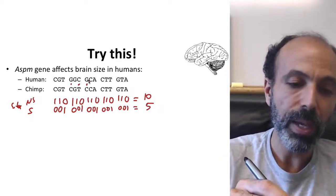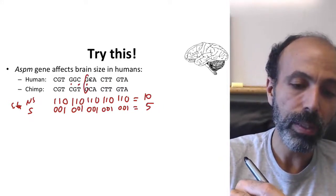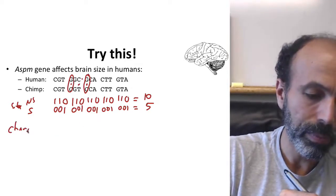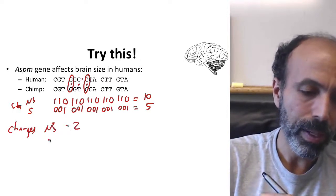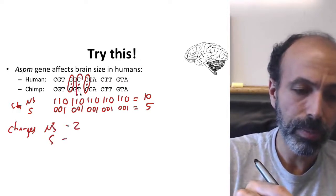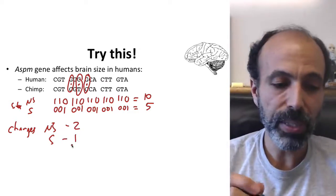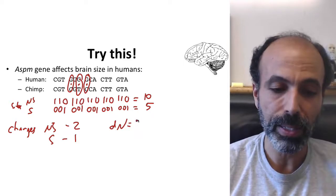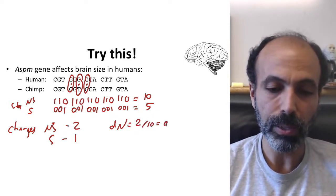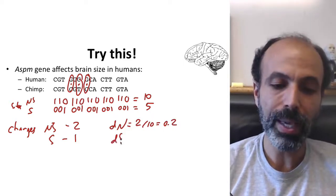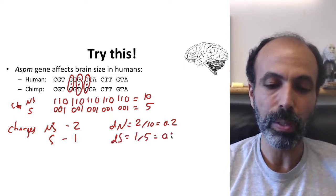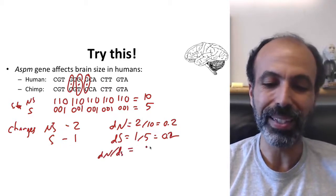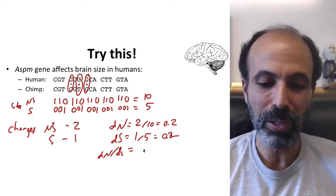And synonymous, we have 1. So, our dN over dS, so dN will be equal non-synonymous changes over non-synonymous sites. So, that'd be 2 over 10, which is equal to 0.2. Our dS is equal to 1 over 5, which is equal to 0.2. So, our dN over dS, it's very easy to calculate in this case, it would be 0.2 divided by 0.2, or it would be 1.